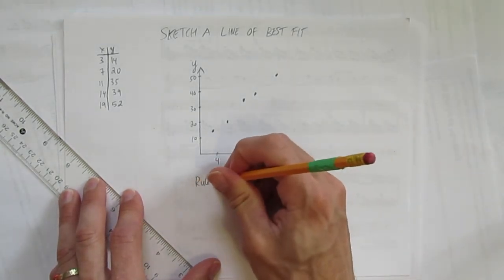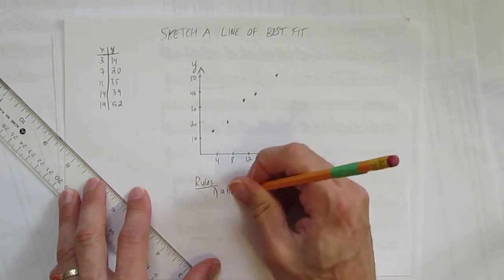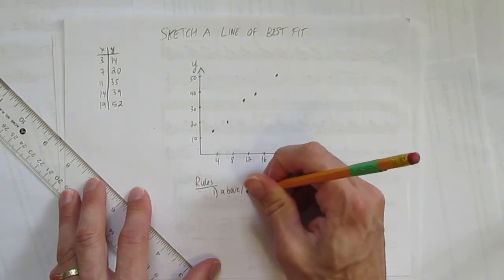Okay, let's look at how to sketch this line of best fit. First of all, the rules, one, I'll just abbreviate them, this one's called above and below.